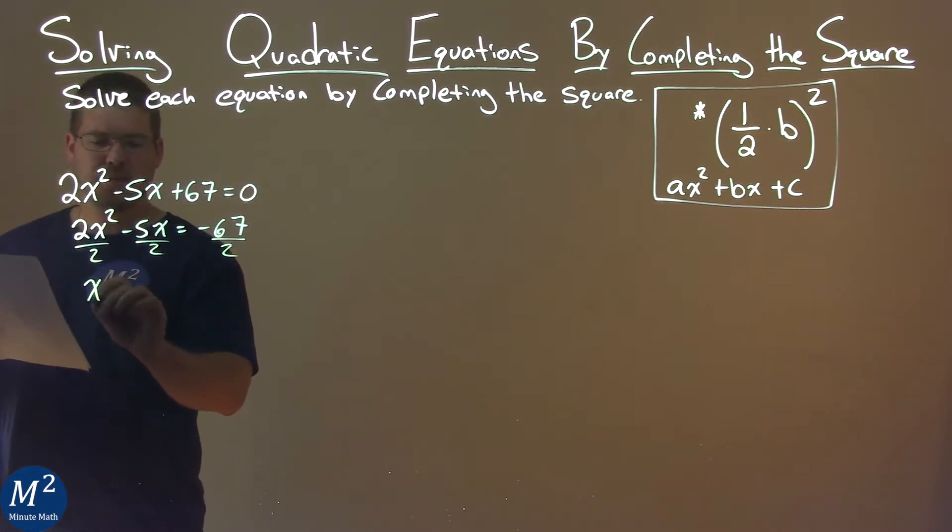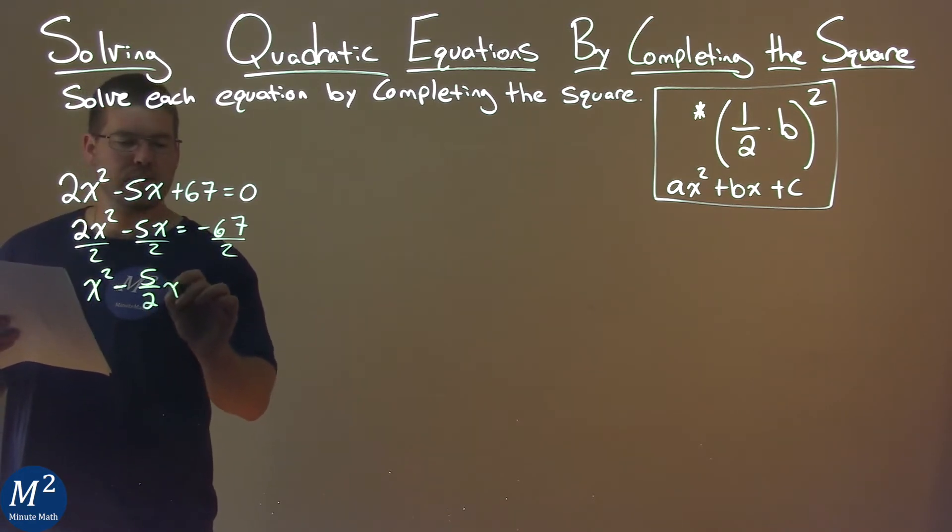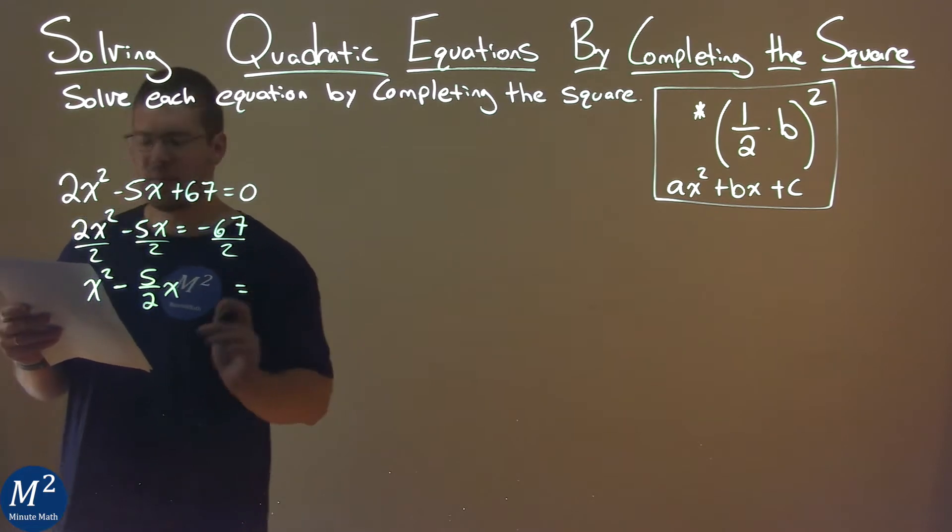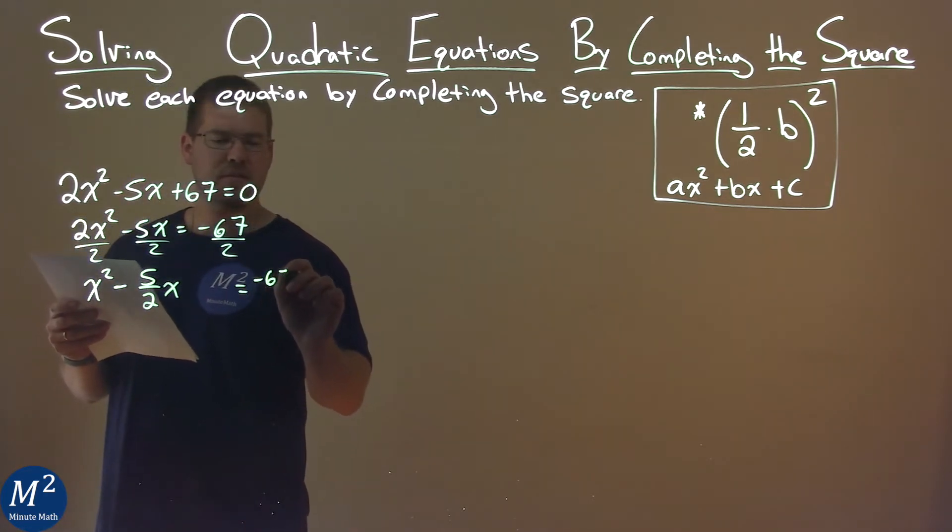So we have x squared here, minus 5 halves x. I'm going to leave a space, then my equal sign, then negative 67 over 2.